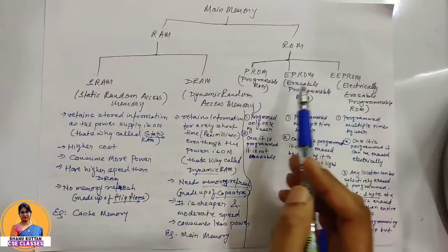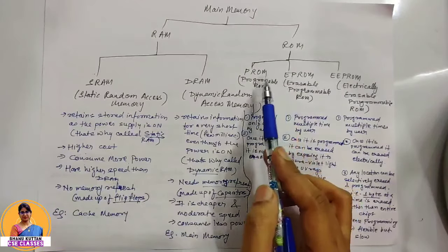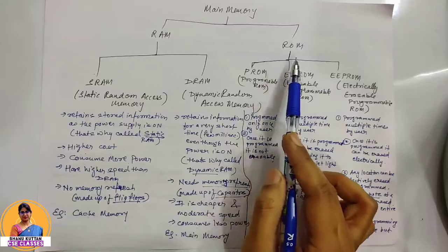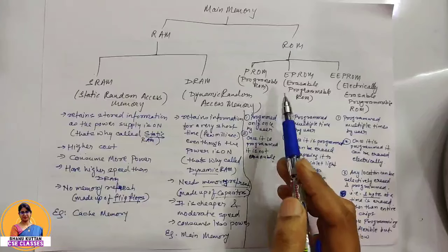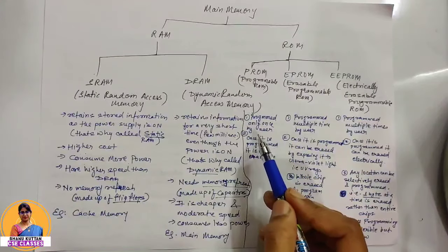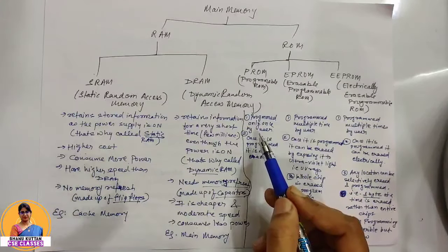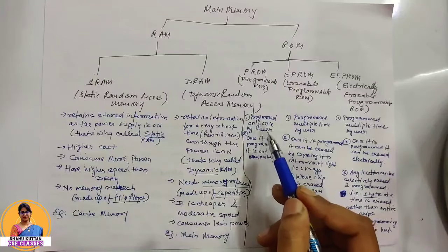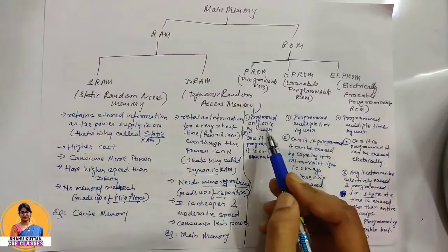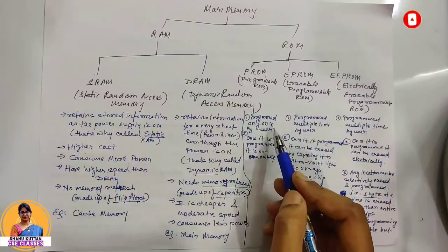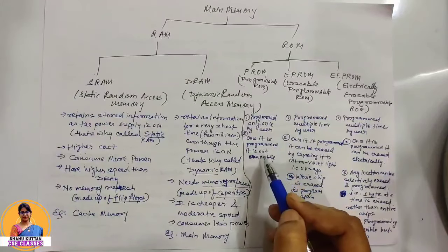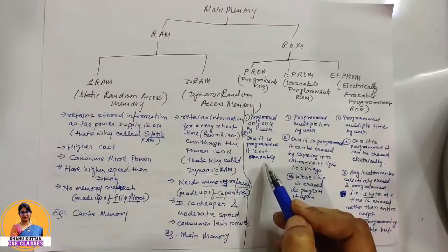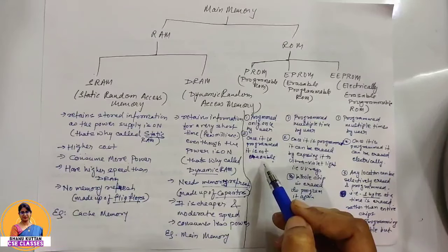The advanced versions of ROM: first is PROM (Programmable Read Only Memory). We can give a blank PROM and enter the desired contents using a PROM programmer. But once it is programmed, we cannot change it. It can be programmed only once by the user, and once programmed, it is not erasable — it is one-time programmable.